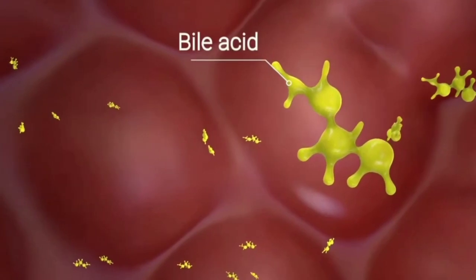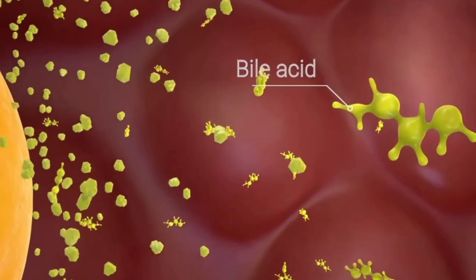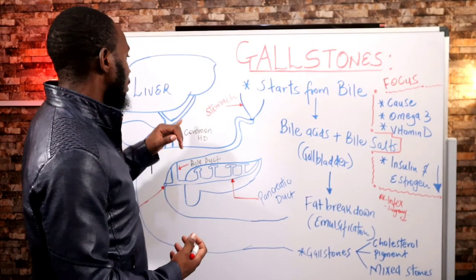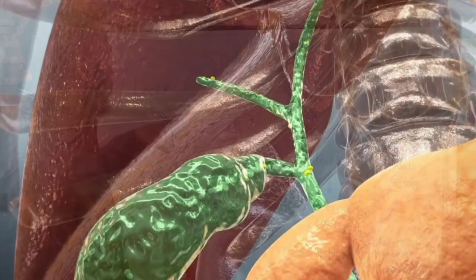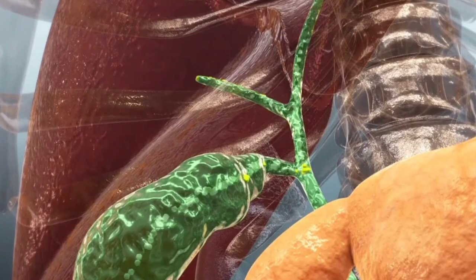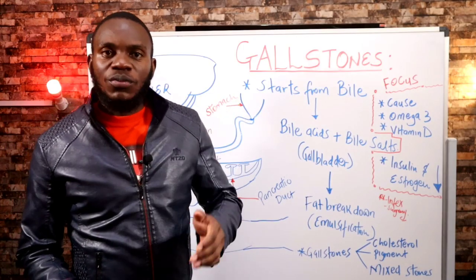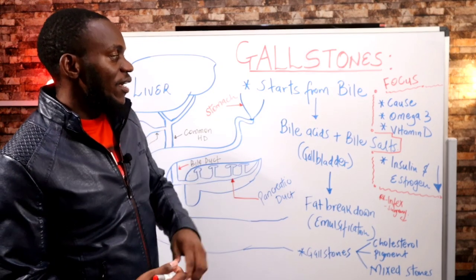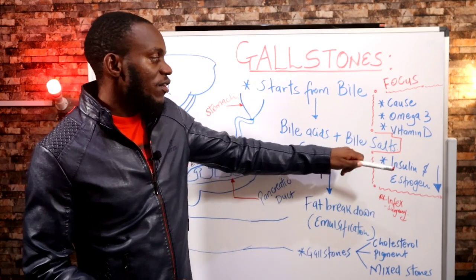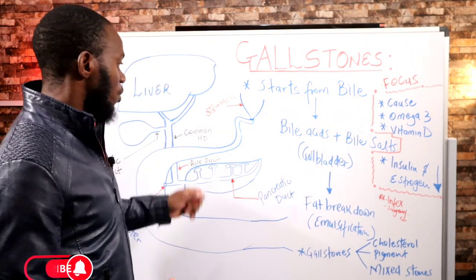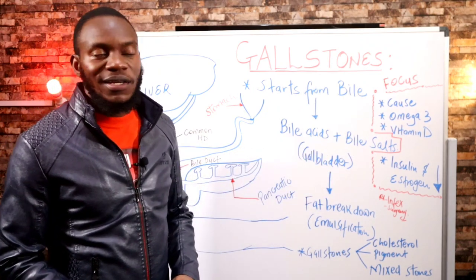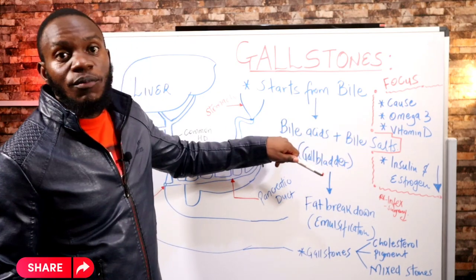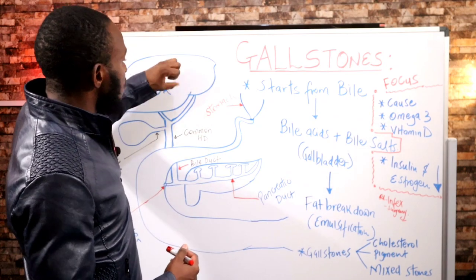Gallstones start from bile. Bile juice is a substance that comes from the liver — it's synthesized by the liver and then stored in the gallbladder. Once synthesized in the liver, it goes through the hepatic ducts into the gallbladder for storage. Now, bile juice has two components: bile acids and bile salts. Hold that thought on bile salts because these are very important in this process — we'll talk about how they help in clearing gallstones.